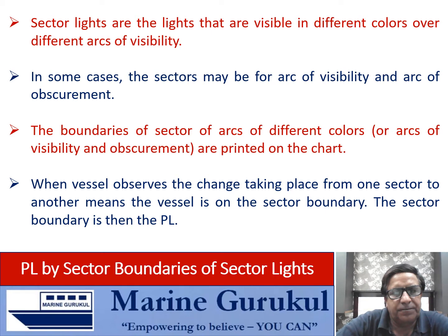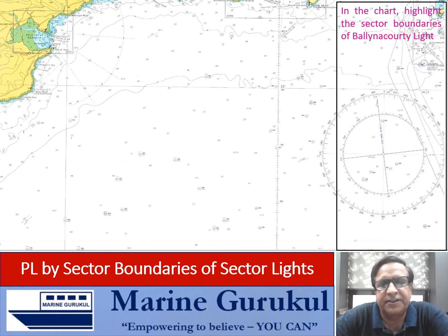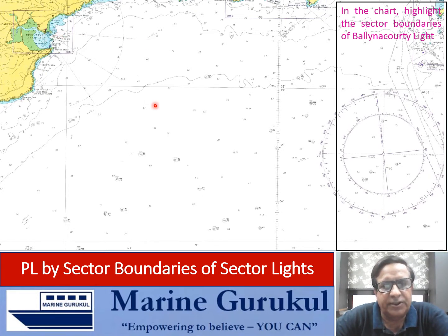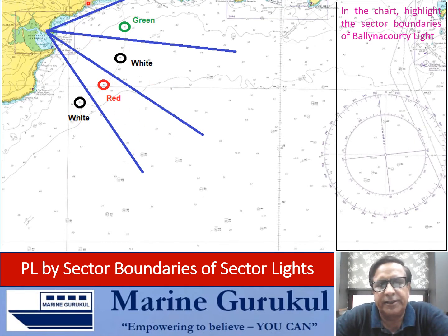Let us understand the sector boundaries as a PL through this example of Belina Koti light, which is a sector light visible in different colors over different sectors. In the chart, here is Belina Koti light and you can see that there are certain sector boundaries already printed on the chart. This light is visible in white in one sector, red in another sector, white in another sector, and green in another sector.